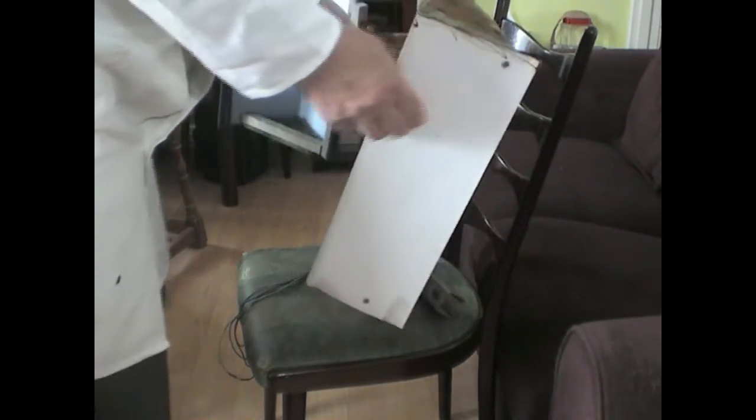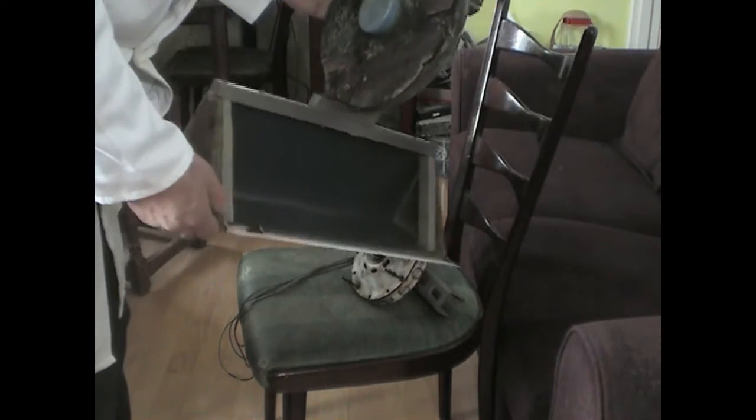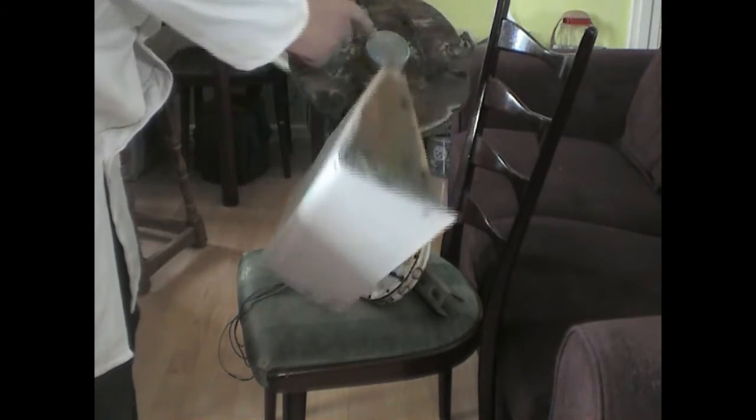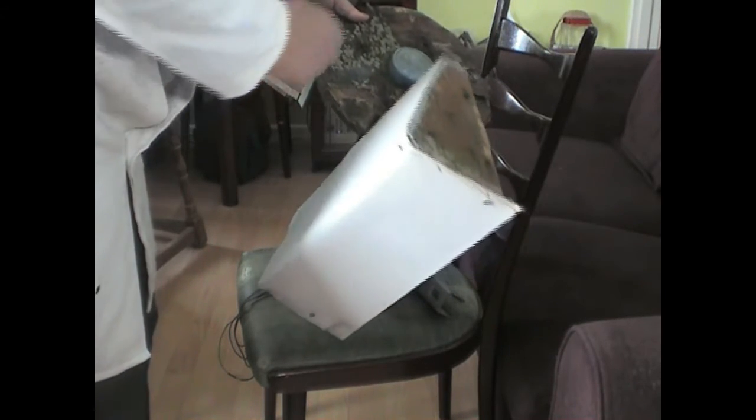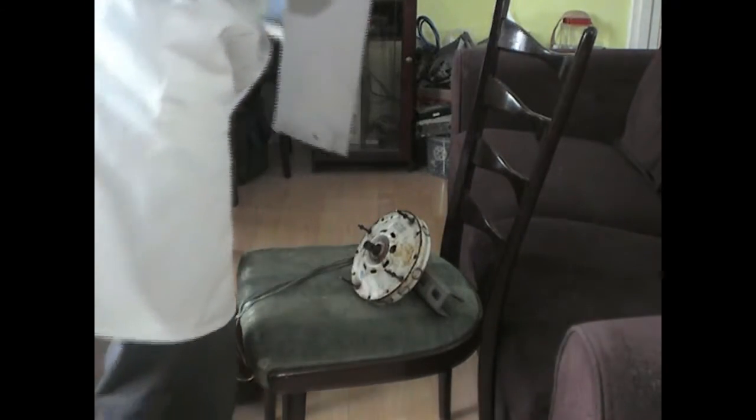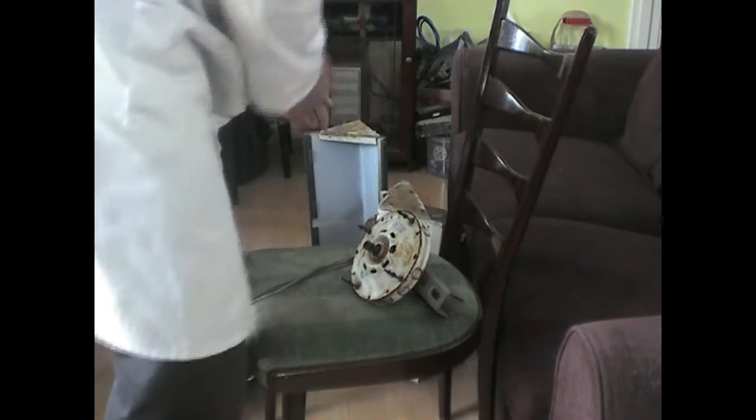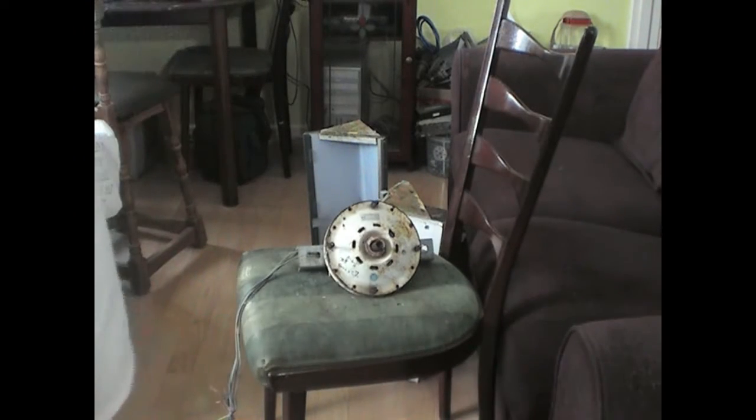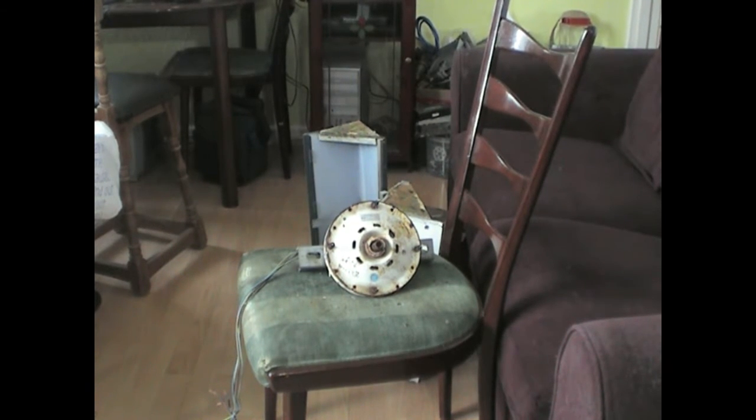The vanes are made out of microwave oven covers. There's a big cap, very well is off a Maxwell coffee jar. Let's have a closer look, shall we, see what we're in.